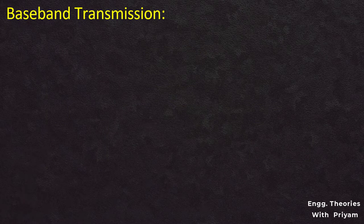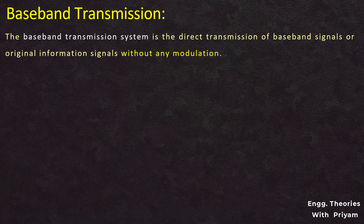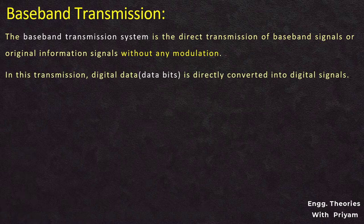Baseband transmission is the direct transmission of the baseband signals or original information-bearing signals without any modulation. In this transmission, the digital data in the form of data bits are directly converted into digital signals. Although data given to a computer is in analog form, the computer converts analog data to digital data using an ADC (analog-to-digital converter). In that process, images are split into pixels, videos into frames, and audio into samples, to store them in digital format.